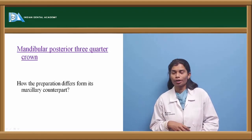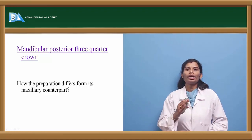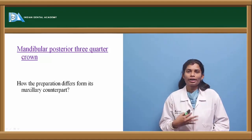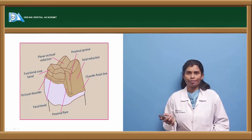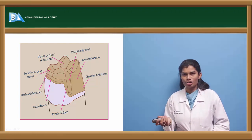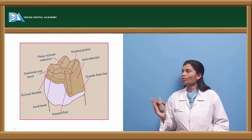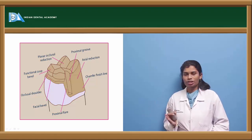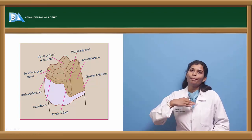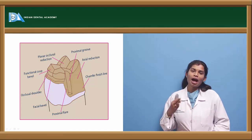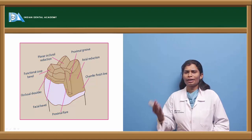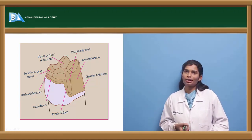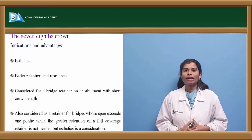For the mandibular posterior three-quarter crown, the difference from the maxillary version is the type of functional cusp — in the lower it is the buccal cusp, in the upper it is the palatal cusp. The reduction protocol and steps are the same: planar occlusal reduction extended proximally into axial reduction, proximal groove, chamfer finish line, and a facial bevel on the buccal surface where the restoration ends after the occlusal offset is placed, flared with a flame bur.